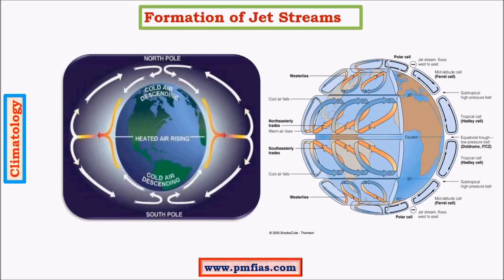Now let us look at the formation of jet streams. Due to temperature difference there are differences in pressure at the equator and poles. At the surface, the equator is at low pressure whereas at the poles the pressure systems are high pressure systems. The exact reverse situation is seen in the upper levels of the troposphere — at the equator we have higher pressures at the top of the layers and lower pressures at the top of the layers at the poles. So here the wind movement is from the equator towards the poles.